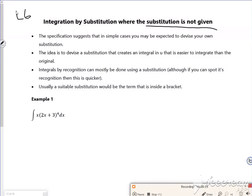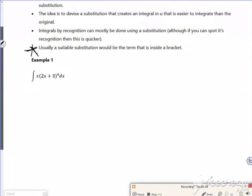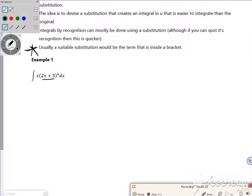I've mentioned it before, just go for whatever's inside the bracket. Here the 2x plus 3 is inside the bracket.